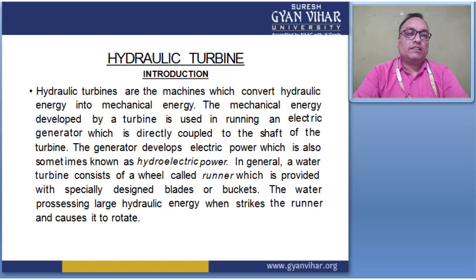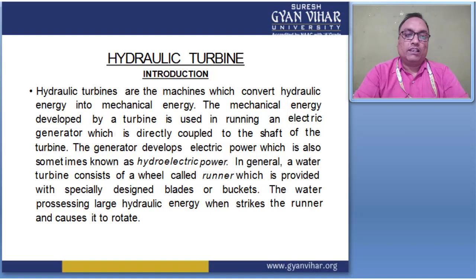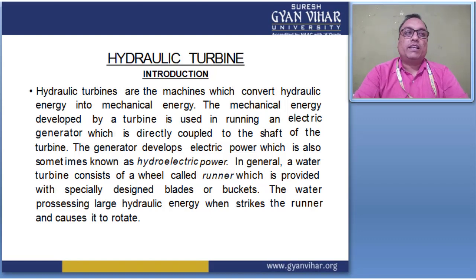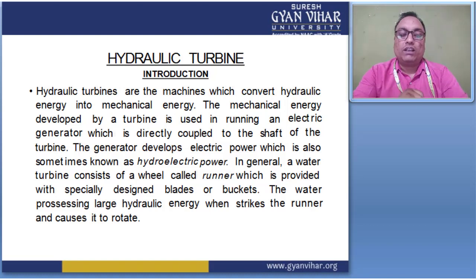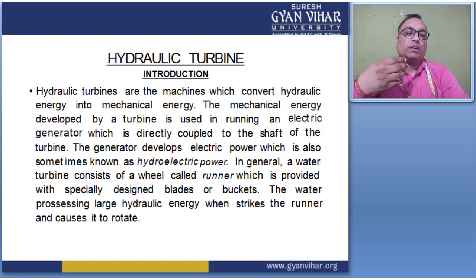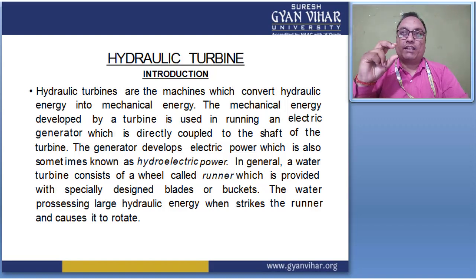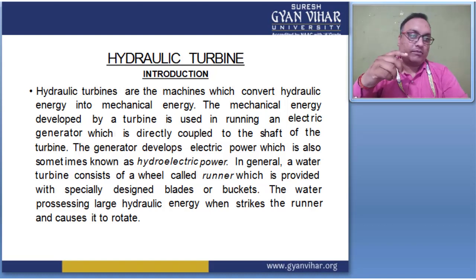In general, a water turbine consists of a wheel called the runner, which is provided with specially designed blades or buckets. These blades play a very important role in the energy conversion process. The blades are sometimes called buckets, and they may be cambered or non-cambered depending on the type of turbine.